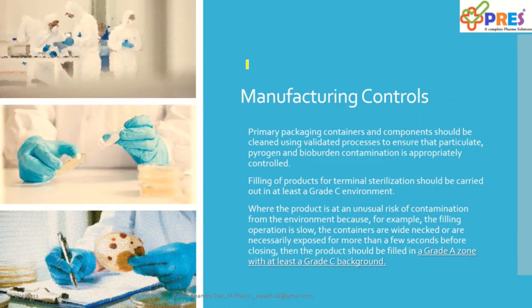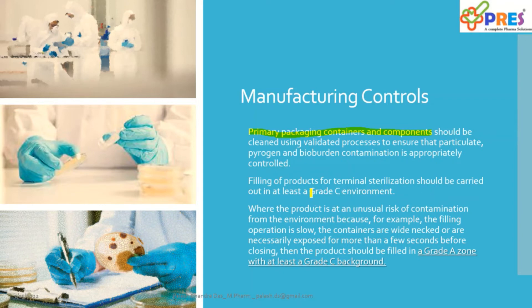Moving further into manufacturing controls: primary packing containers and components should be cleaned using a validated process to ensure that particulate, pyrogen, and bioburden contaminations are appropriately controlled. Whatever components will be in contact with your solution — the primary packaging containers and components — how well you control bioburden there will reduce the load in your final processing. Filling of product for contamination should be carried out at least in a Grade C environment.